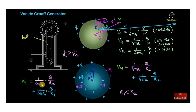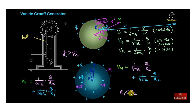So V(m) = (1/4πε₀)(Q/r₂) + (1/4πε₀)(q/r₁), where r₁ < r₂ — the inner sphere has a smaller radius and the outer sphere has a bigger radius.